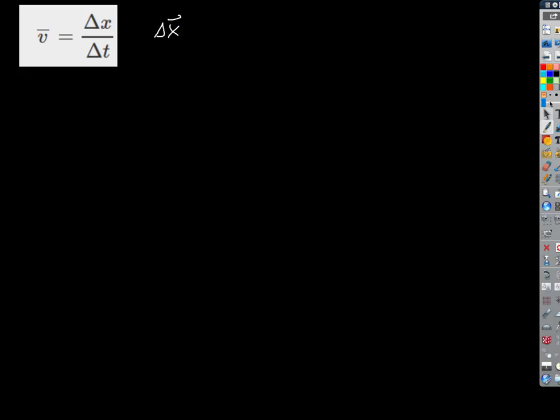So what is delta-x? It's displacement. Time t is not a vector, obviously. Displacement — what's the definition of displacement? It's x-final minus x-initial. In the online textbook they write the subscript f for x-final, which is fine. But in most books, if you have an x without a subscript, that's the x you're looking for — x after you started the stopwatch. So that's x-final.